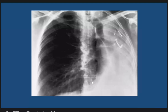Here is a patient with pneumonectomy. We see total opacification of the left hemithorax with multiple surgical clips on the ribs. The trachea is shifted to the left side with compensatory hyperinflation of the right lung.